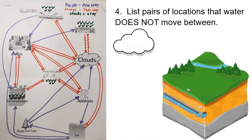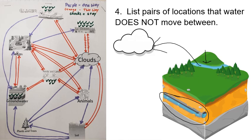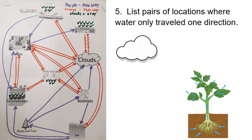Groundwater is deep underground. Water from groundwater can't go to a plant — plant roots are in the top part, the soil, not deep underground. There are also no animals that live deep underground, so water never goes from groundwater into plants or animals. And water can't go from groundwater directly to a cloud, because there's no sunlight down there to make the water evaporate. Water on the surface can evaporate and go to a cloud, but not groundwater.